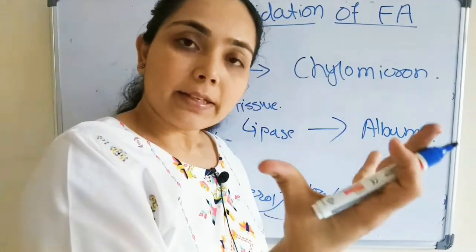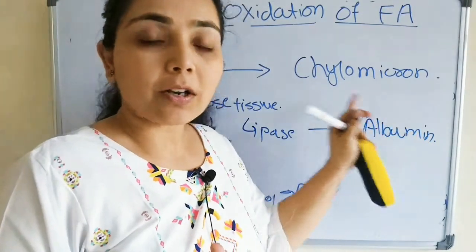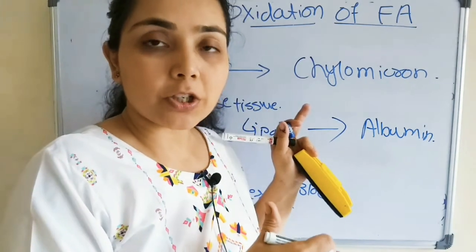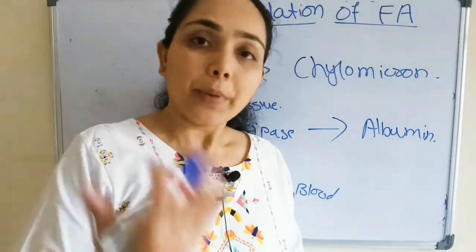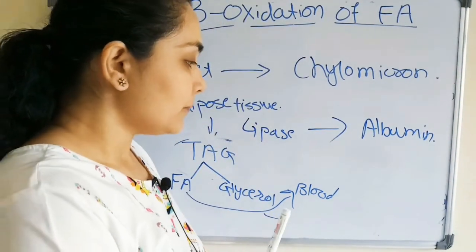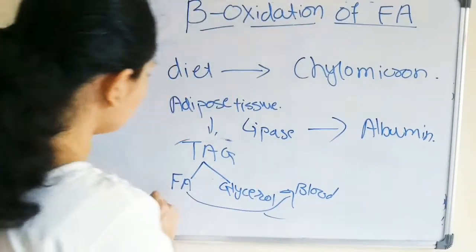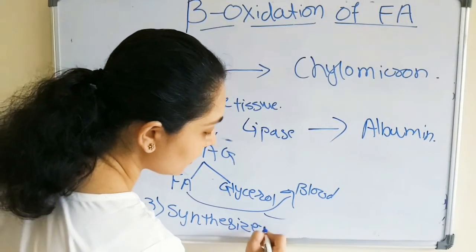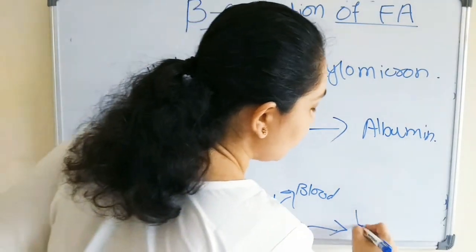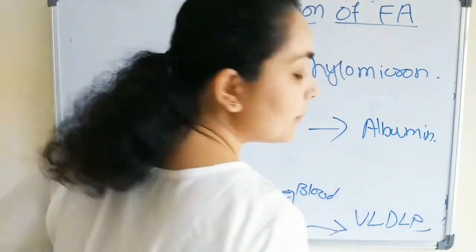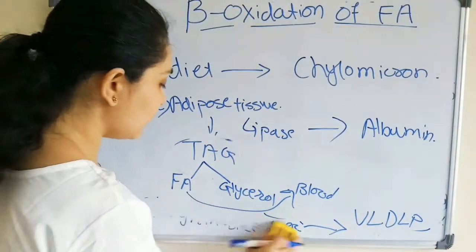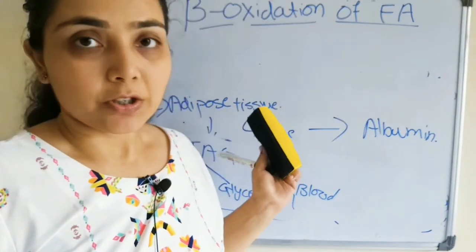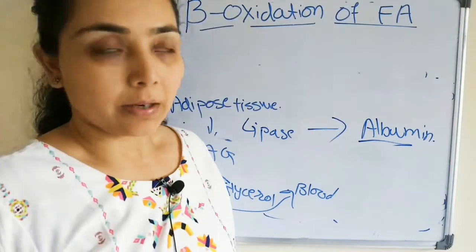So the first source is fatty acid from the diet, transported by chylomicrons. If obtained from the fat deposit or adipose tissue, it is transported by albumin. The third source is fatty acid synthesized in the liver, which is transported by very low density lipoprotein (VLDL). We will focus mainly on the fatty acid obtained from the adipose tissue, which is transported by serum albumin.